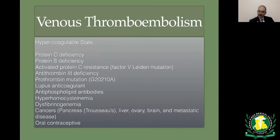There are several hypercoagulable states — some hereditary, some acquired — such as protein C deficiency, protein S deficiency, activated protein C resistance, factor V Leiden, antithrombin III deficiency, prothrombin mutation, lupus anticoagulant, antiphospholipid syndrome, and so on. Most cancers also lead to an increased coagulable state.